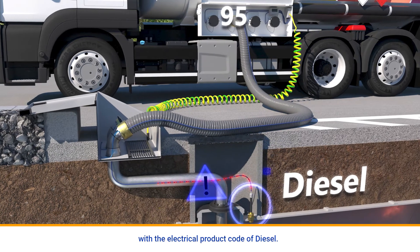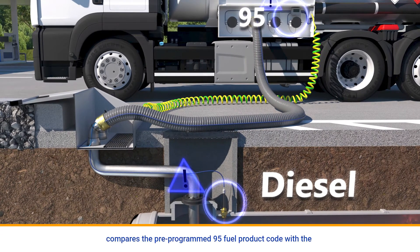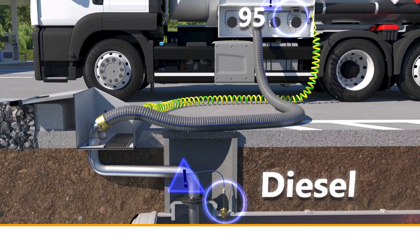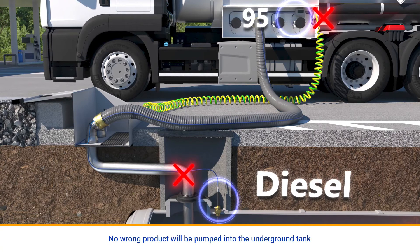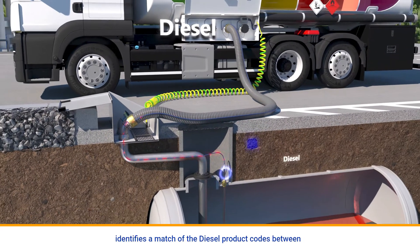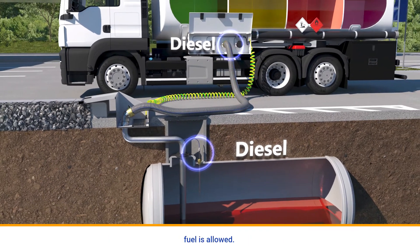When the 95 fuel is pumped into the underground tank, the truck amplifier compares the pre-programmed 95 fuel product code with the product code stored in the O2PID, which is diesel. Due to the mismatch or crossover, the truck amplifier does not allow for the fuel delivery. No wrong product will be pumped into the underground tank and product crossovers are prevented. When the truck amplifier identifies a match of the diesel product codes between the O2PID sensor and the truck amplifier, the delivery of fuel is allowed.